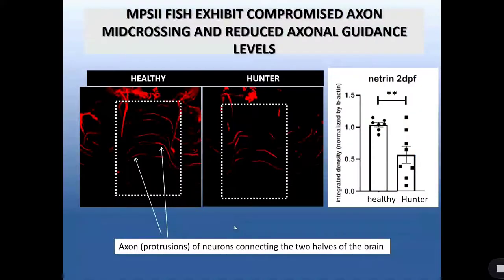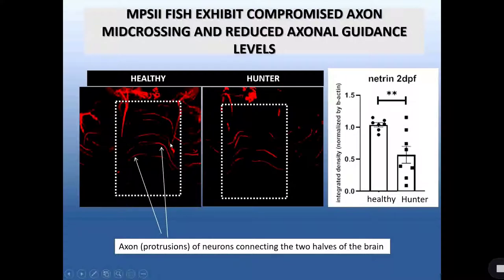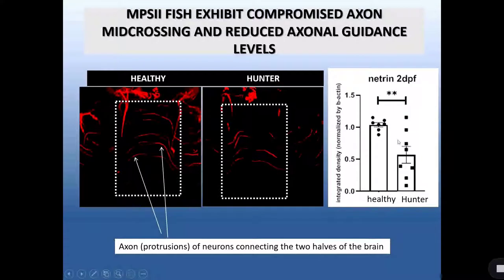We analyzed many brain aspects in our MPS II fish model. What we surprisingly found was that in Hunter fish, neuronal cell protrusions, which we called axons, are not properly connecting the two halves of the brain. The red protrusions shown here are not properly connecting the two halves. Interestingly, we found that in the same fish, netrin, one of these axon guidance molecules, was dysregulated, was reduced.